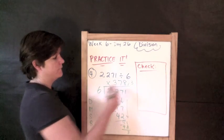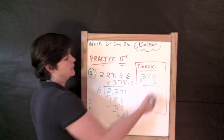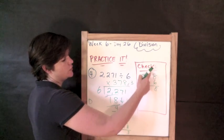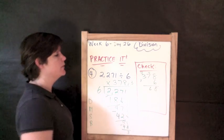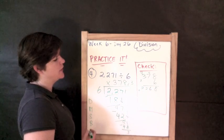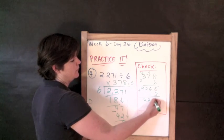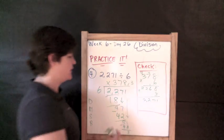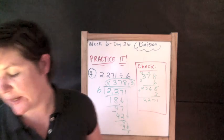Check the work: 378 times 6, then add the remainder of 3. 8 times 6 is 48; 7 times 6 is 42 plus 4 is 46; 3 times 6 is 18 plus 4 is 22 — giving 2268. Add the remainder of 3: 2268 plus 3 is 2271, which matches. So the correct answer is 378 remainder 3.